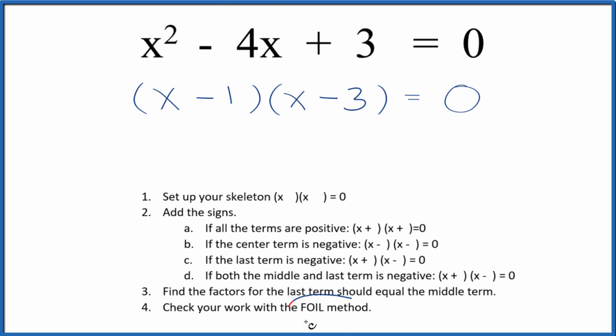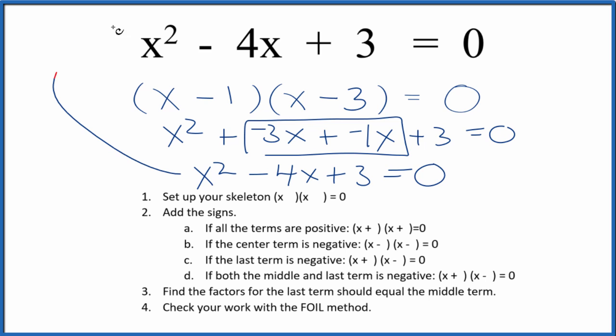But we should check our work with the FOIL method here, just to make sure we have this correct. First terms plus the outside terms, that's negative 3x, plus the inside, that's just negative 1x. And then the last, negative 1 times negative 3 gives us a positive 3. That equals 0. We can combine these terms here, and we end up with x squared minus 4x plus 3 equals 0. And that's what we started out with. So we did this correctly.